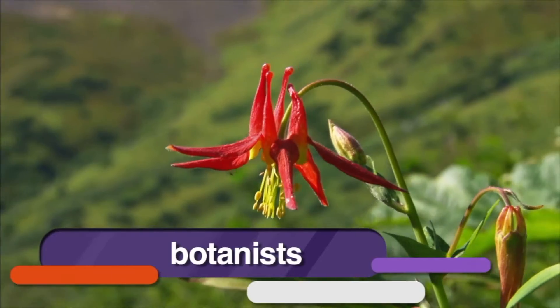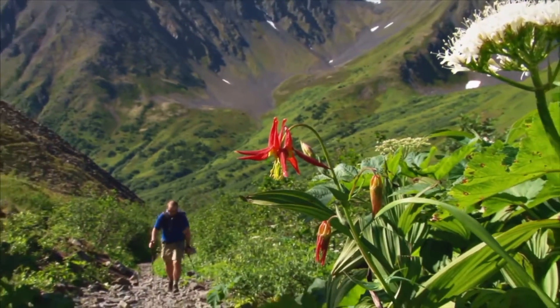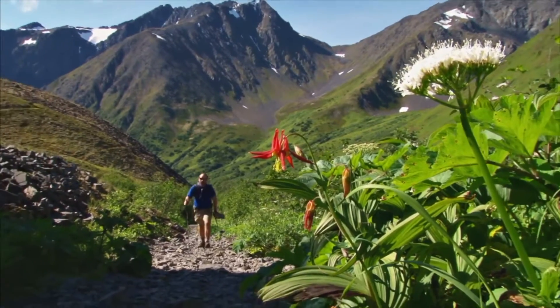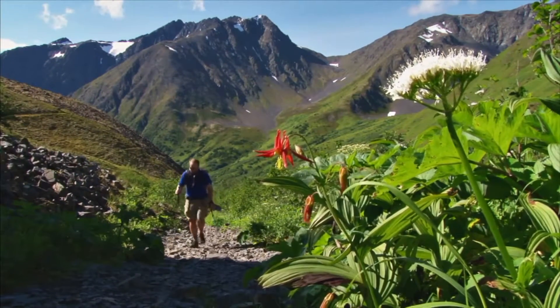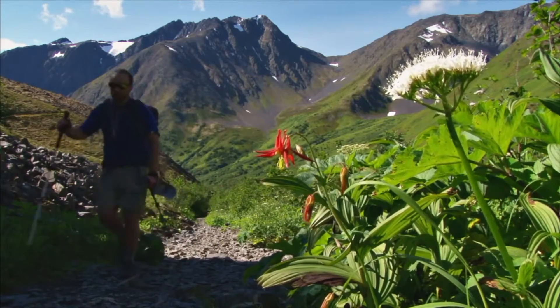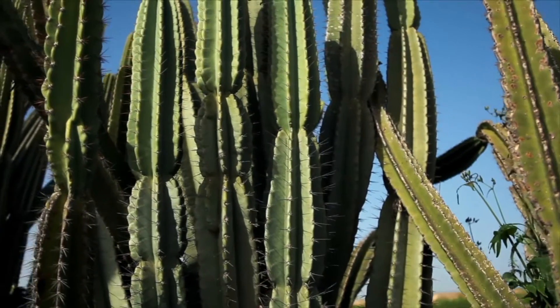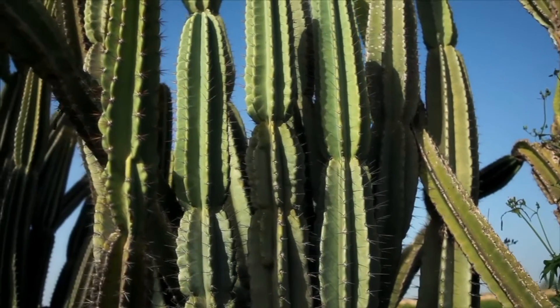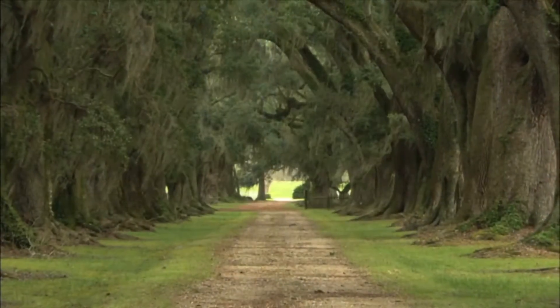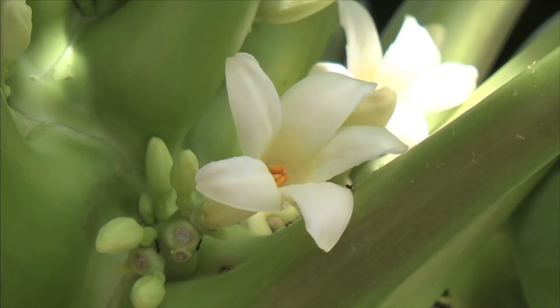Botanists are scientists who study plants. They have named and described over 300,000 different kinds of plants, and they estimate that there are still many more kinds of plants they haven't discovered yet. That's a lot of plants. Plants do come in all shapes and sizes, but they have some common features. First is that most plants are green. Most plants are attached to the ground, and all plants make their own food.